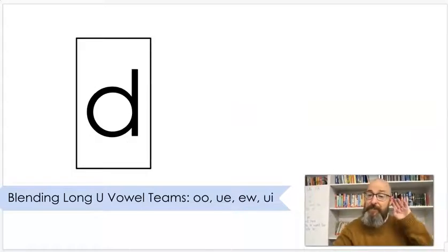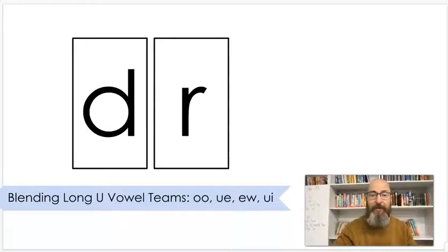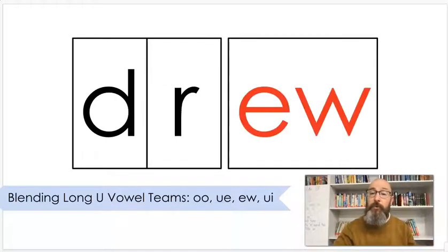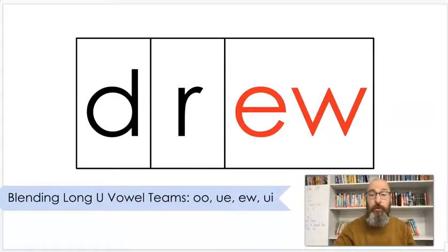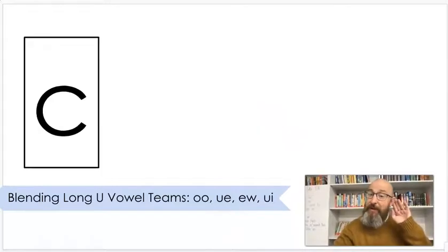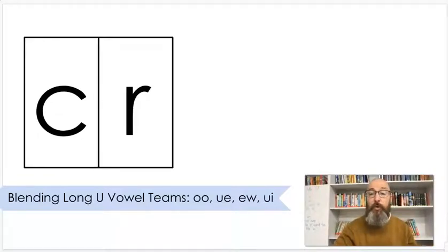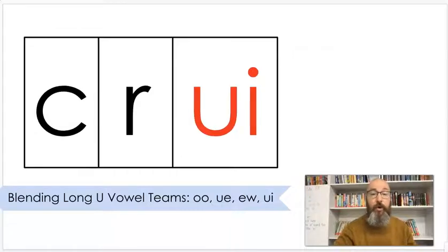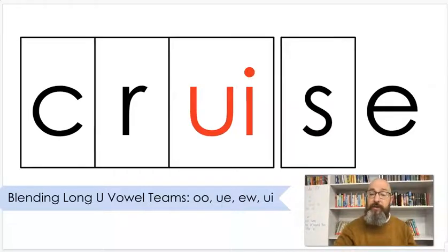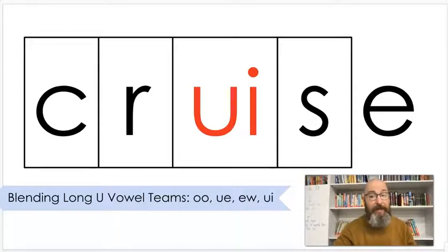Sound: D. Sound: R. Put that together — Drew. Drew is the past tense of draw. If you drew a picture, it's already done. Sound: K. Sound: R. Put that together — crew. Put that together — cruise. If you're taking a cruise, you'd be taking a trip on a boat.